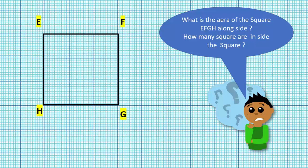See the figure — square EFGH. In this figure, what is the area of square EFGH? How many squares are inside the square? Let us count: one, two, three, four, five, six, seven, eight, nine.